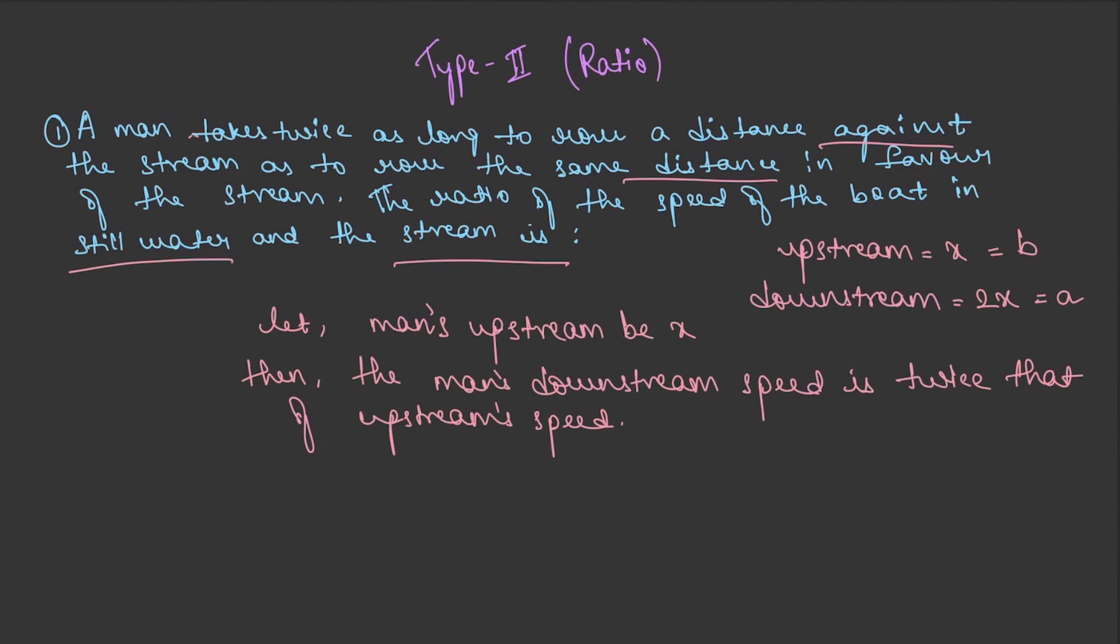We know that the formula for this is half of (a+b) and the formula for this is half of (a-b). Now ratio of these two, that is half of (a+b) is to half of (a-b). Now we know that a is 2x and b is x.